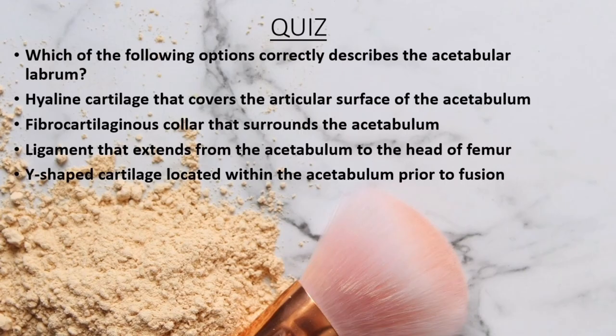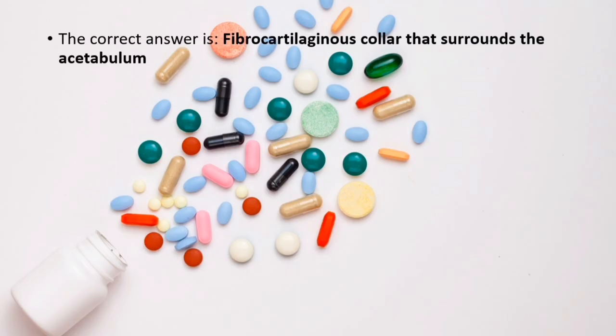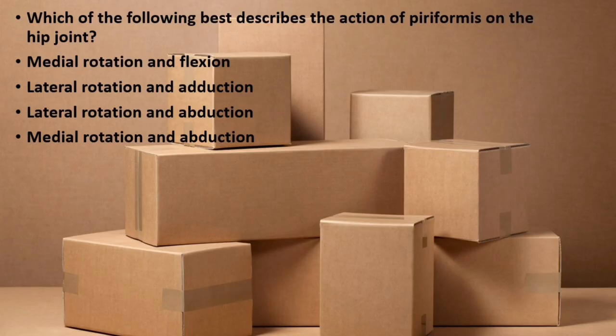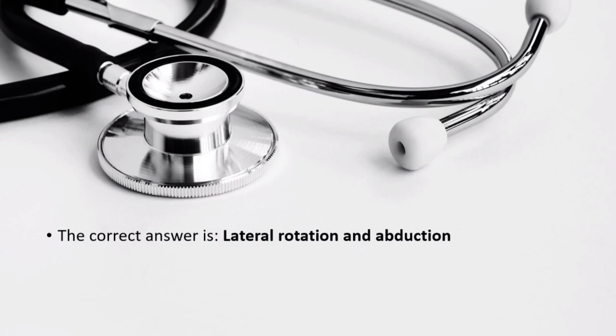Quiz. Question 1: Which of the following options correctly describes the acetabular labrum? Hyaline cartilage covering the articular surface; fibrocartilaginous collar surrounding the acetabulum; ligament extending from acetabulum to head of femur; or Y-shaped cartilage within the acetabulum. The correct answer is fibrocartilaginous collar that surrounds the acetabulum. Question 2: Which of the following best describes the action of piriformis on the hip joint? The correct answer is lateral rotation and abduction.